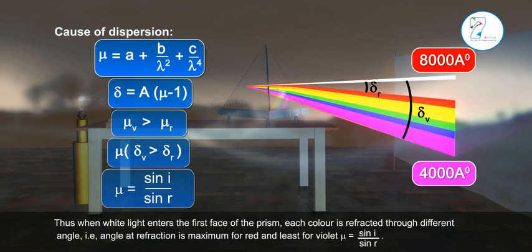Thus, when white light enters the first face of the prism, each color is refracted through different angle. That is, angle of refraction is maximum for red and least for violet, μ = sin i / sin r.